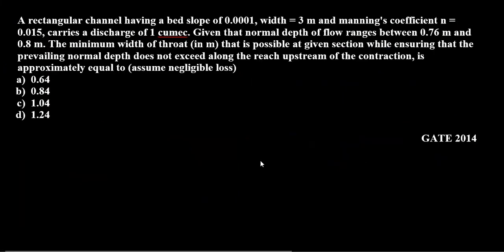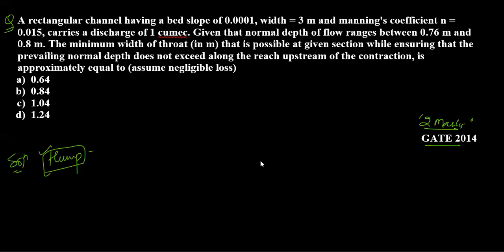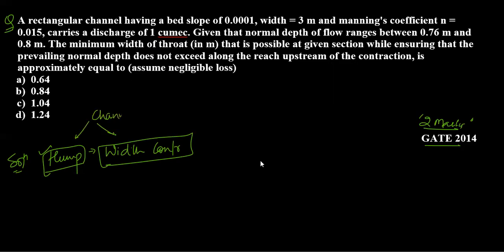This completes the first question (GATE 2.14). Now we move to the second question. This question involves a concept we have seen before — the hump case. We saw a hump in the last video. Along with a hump, we can also have a width contraction in the channel. These are called channel transitions, and there are two types: one is hump, and the second one is width contraction.